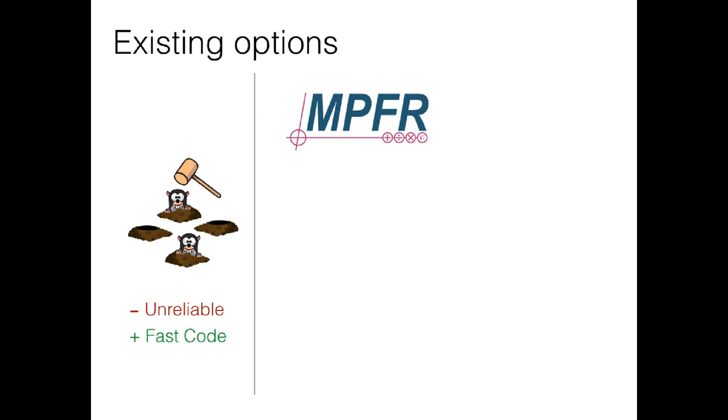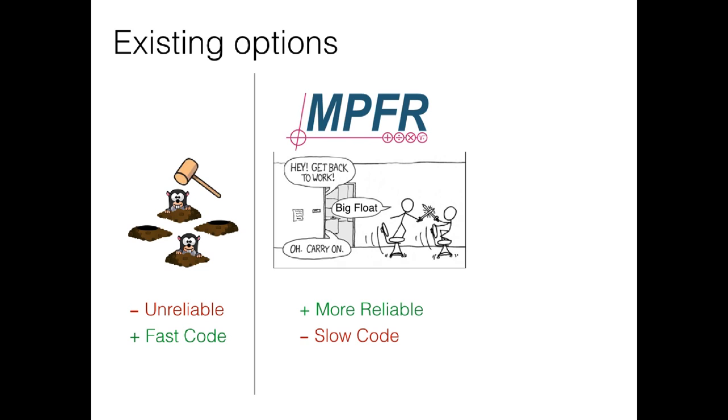The first is basically to play whack-a-mole with your bugs. Try to fix one after another, hoping that the rounding errors will eventually disappear. Needless to say, this is frustrating. In principle, another approach would be to use an arbitrary precision library, like MPFR. These require some expertise. You need to choose how many bits you're going to use. But much worse is the fact that these libraries are incredibly slow. Hundreds or thousands of times slower than native floating point. These are often completely impractical for actual applications.